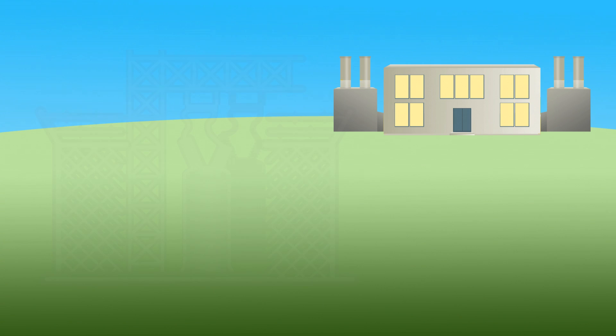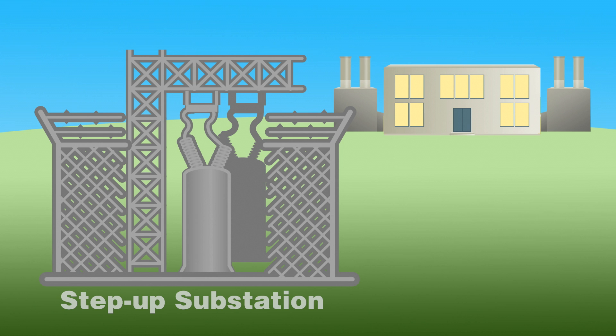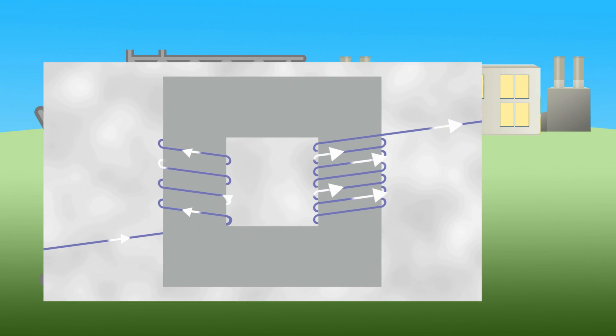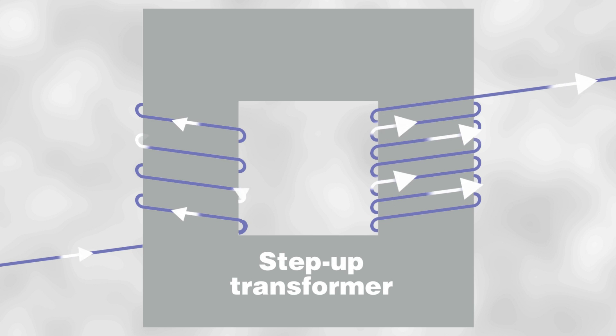After electricity has been generated, it goes through an on-site transformer to step up the voltage, or pressure, of the electricity. This high voltage electricity is now better suited to travel across long distances on power lines.